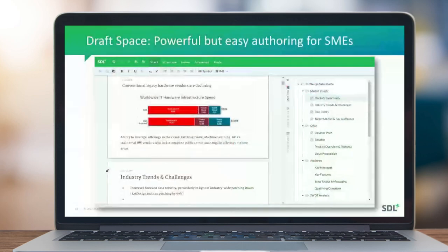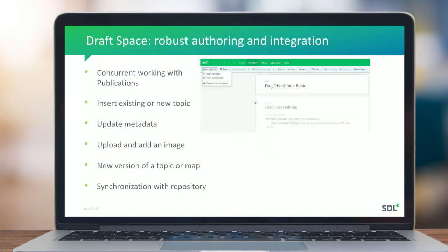DraftSpace has a very clean user interface. On the right-hand side is the outline view, which is the DITA map. On the left side you see the actual content — multiple topics as you scroll down. You can see which topic is being edited by the unlock icon. The system supports concurrent use of the same publication — multiple users can have the same publication open at the same time, even alongside Publication Manager. Only one author can be editing a topic at a time, which has been part of the system from the beginning.